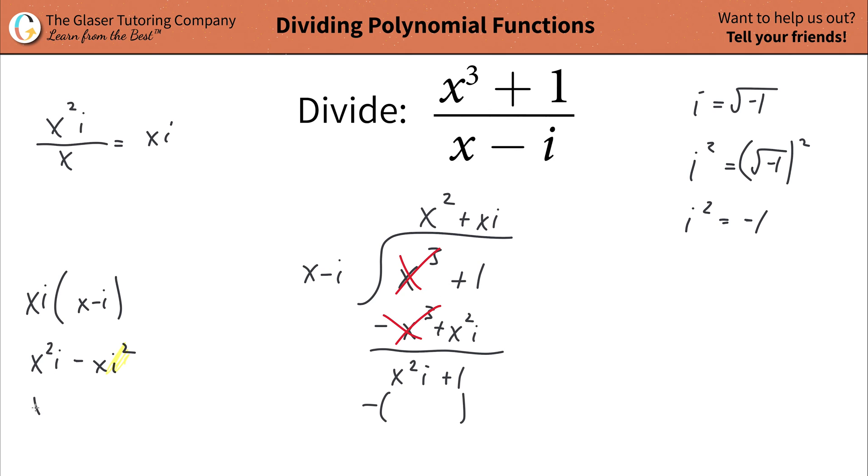So what I'm going to do then over here is instead of writing i squared, I'm going to write negative one. And this now simplifies down to plus x, because it's a negative one times the negative. It becomes positive and the x is left over. So this is now the term that gets put into that parentheses. So x squared i plus x.